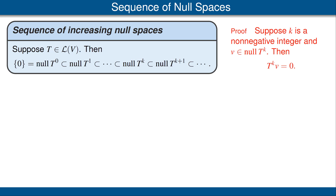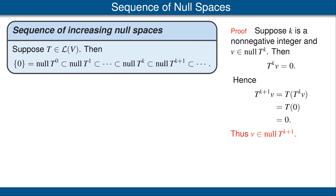Let's look at the proof of this result, which is quite easy. Suppose K is a non-negative integer and V is in the null space of T to the Kth power. That means T to the K applied to V is 0. Then T to the K plus 1 applied to V, which is T applied to T to the K of V, is simply T applied to 0. Because T is linear, T of 0 is 0. So we conclude that T to the K plus 1 of V is 0, which means V is in the null space of T to the K plus 1. We started with V in the null space of T to the K and concluded V is in the null space of T to the K plus 1. That means the null space of T to the K is contained in the null space of T to the K plus 1, which is what we wanted to prove. This completes the proof.